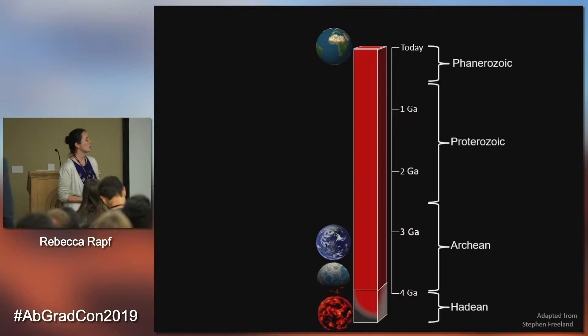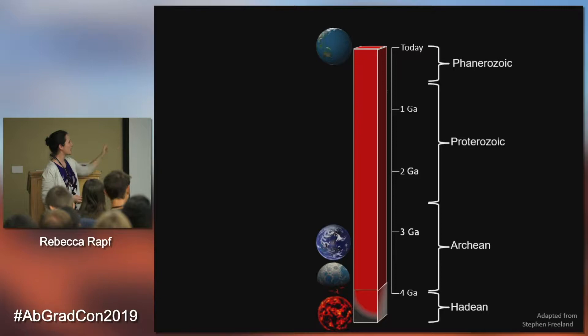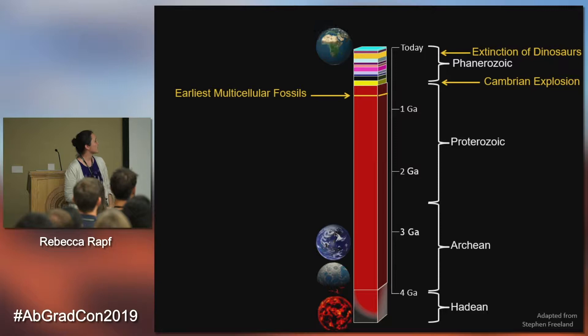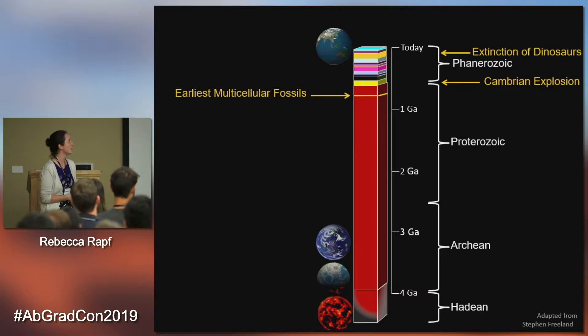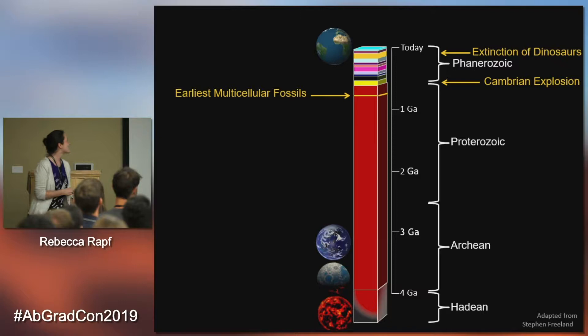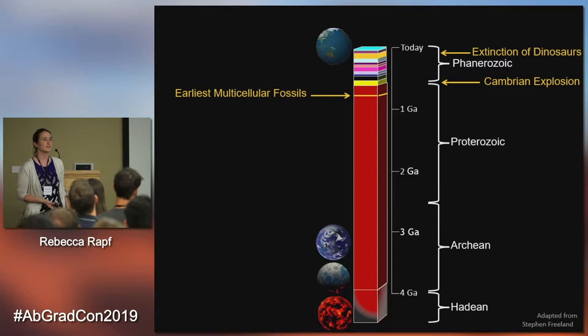I'm just going to walk through this really quickly — the disclaimer being I am a chemist, not a geologist. We've got the various geologic time scales here. The extinction of the dinosaurs is right up here, very close to today. The Cambrian explosion is right about here, and then our earliest multicellular fossils are right about here.